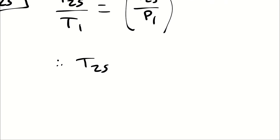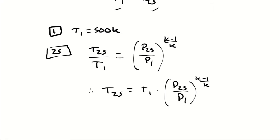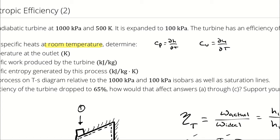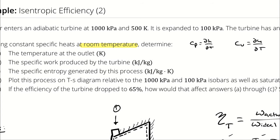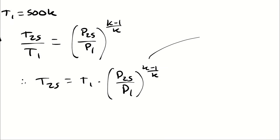Therefore, T2S is going to be equal to T1 multiplied by P2S over P1 raised to the K minus 1 over K. T1 is known, it's 500 Kelvin. P1 is known, it is 1,000 kilopascals. P2S is equal to P2, which is 100 kilopascals. I know everything in this equation except for K.